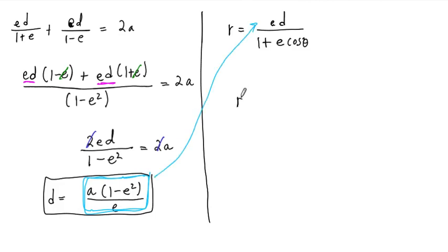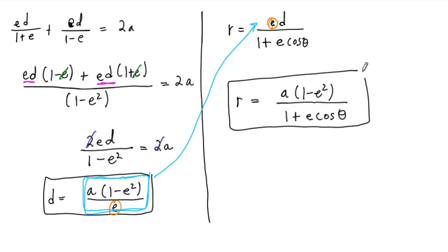And we end up with this formula for the ellipse with semi-major axis a and eccentricity e. Notice that when we plug this in for d, there's a copy of e here, and then another one in this denominator, those are going to cancel, and we end up with r equals a times 1 minus e squared over 1 plus e cosine of theta. So this is a polar equation of an ellipse that tells you the eccentricity e, and it also tells you the length of the semi-major axis a.